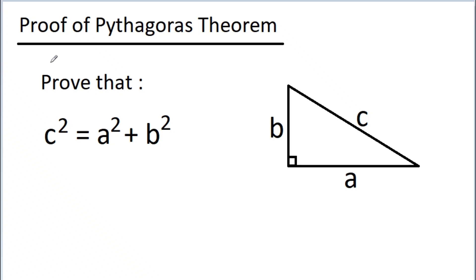In this video we are going to prove the Pythagorean theorem. That is, if the base and height of a right triangle are a and b, and the hypotenuse is c, then we have to prove that c square is equal to a square plus b square.